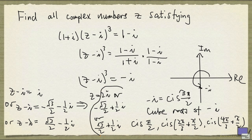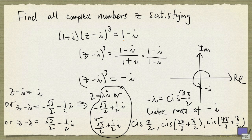So these three complex numbers are all the possible solutions to the equation.